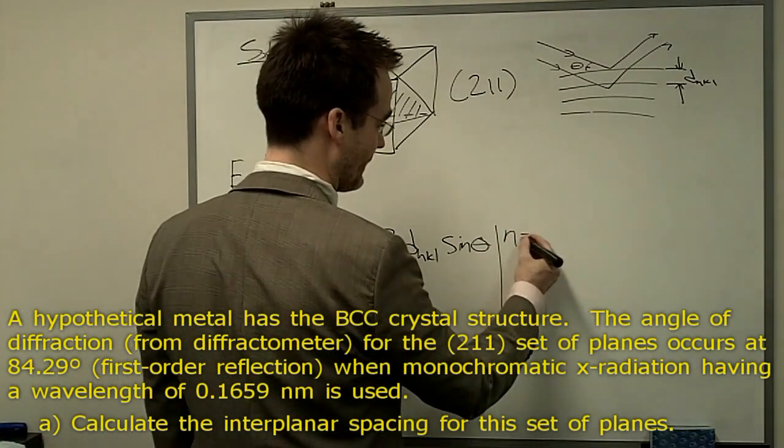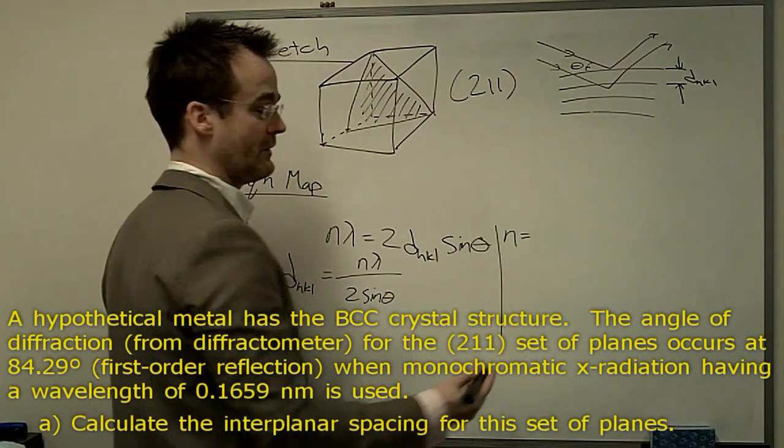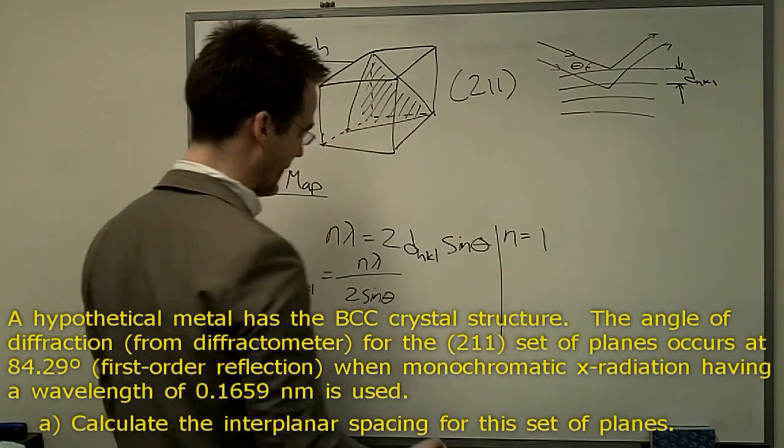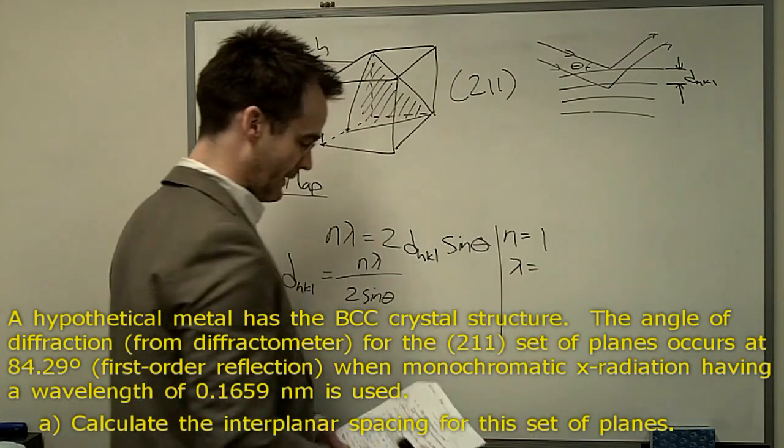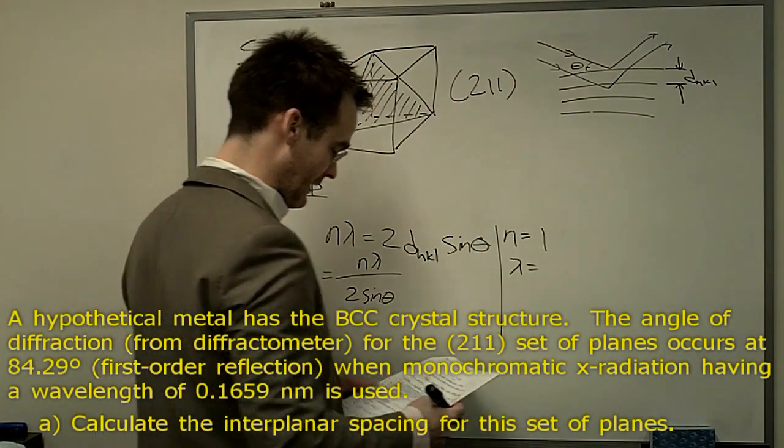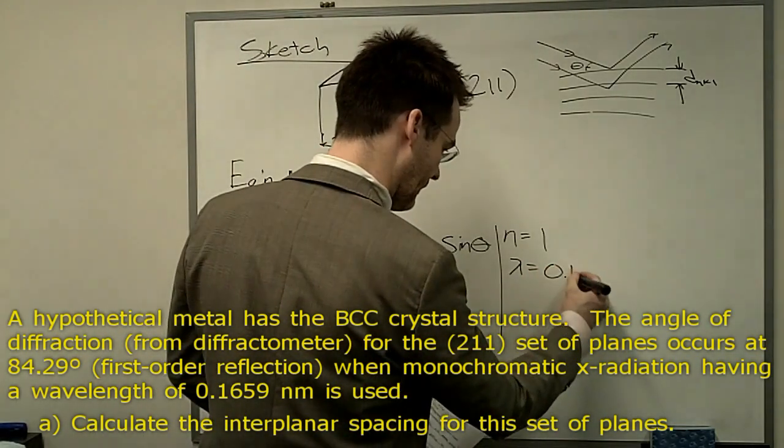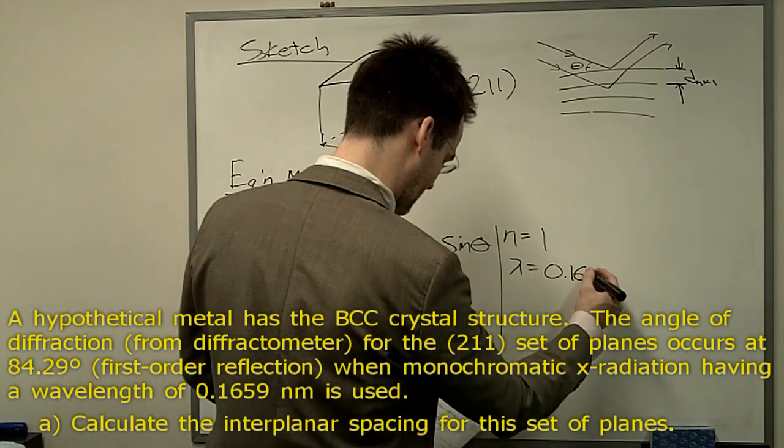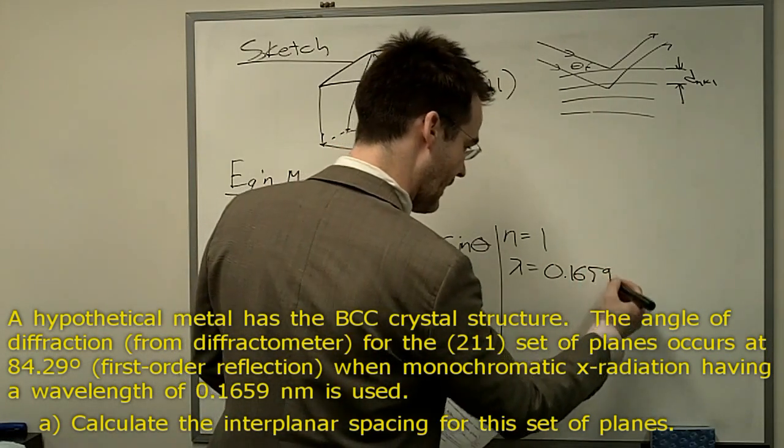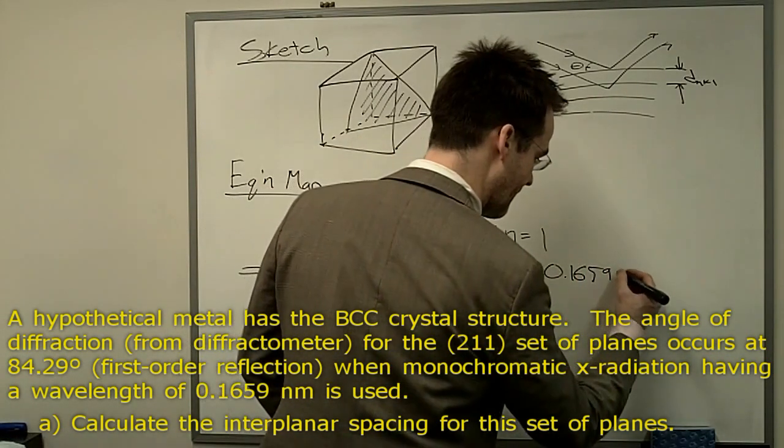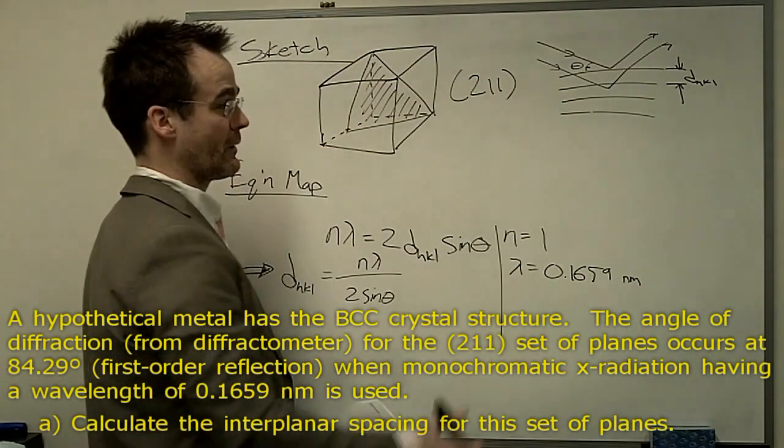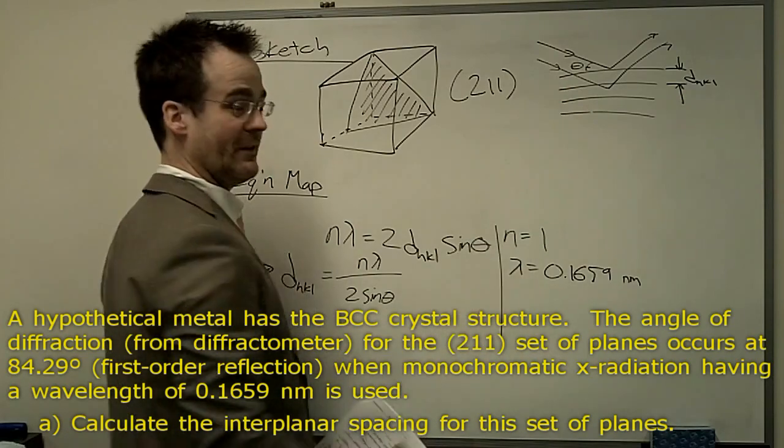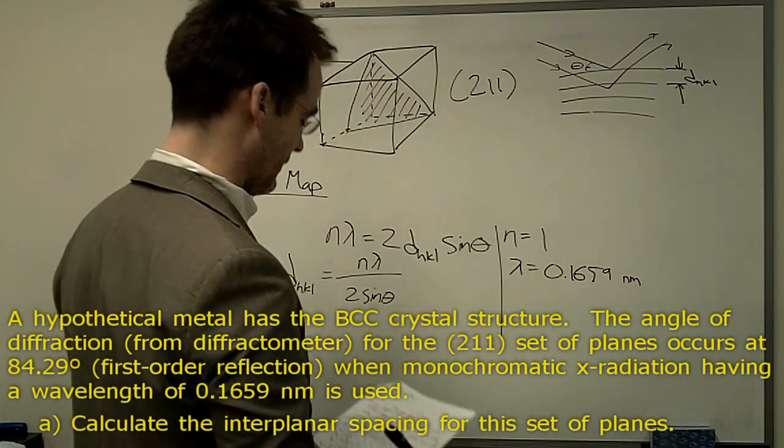So we actually have n, the order of the reflection, and the question gives us its first-order reflection. So n equals 1. The wavelength is given, and the wavelength is 0.1659 nanometers. So I'm just going to go ahead and leave that in nanometers, and we're going to get a final dimension for d_HKL in nanometers as well.